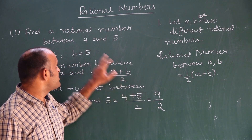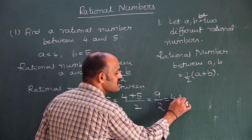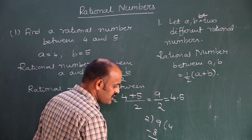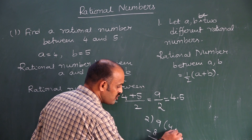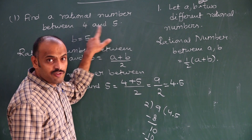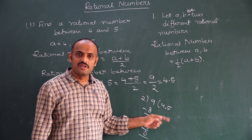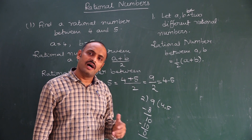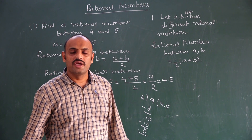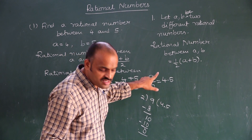How to check whether 9 by 2 lies between 4 and 5? If you convert it into decimals, 9 by 2 is 4.5. Four point five lies between 4 and 5. So the rational number between 4 and 5 is 4.5. Someone may say there are other rational numbers also — yes, that is correct. There are infinite rational numbers between any two rational numbers. One of them is 4.5.